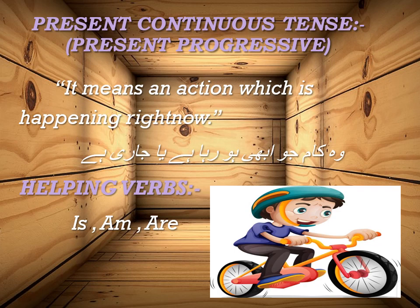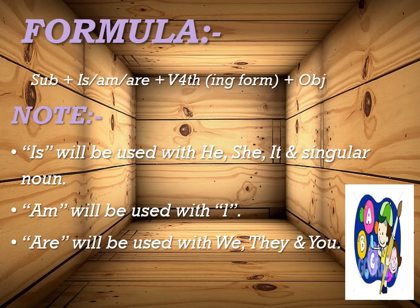The helping verbs are is, am, are. Ab inhe kin subject pronouns ke saath use kiya jayega, and what would be the formula? The formula is: subject plus is/am/are plus verb fourth form plus object. As you know, doer of an action is called subject. Subject ke according is, am, or are use kiya jayega. Verb ke saath jab hum ing add karte hain toh wo fourth form kehlati hai. Object-less sentences bhi ho sakti hain. Is use kiya jayega he, she, it, or kisi bhi singular noun ke saath. Am use kiya jayega I ke saath. Are use kiya jayega we, you, they ke saath.